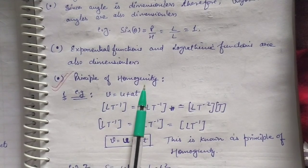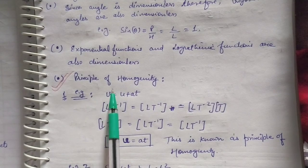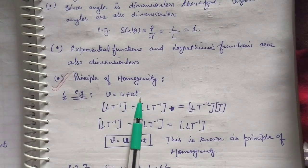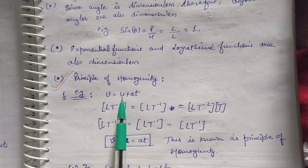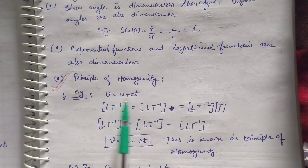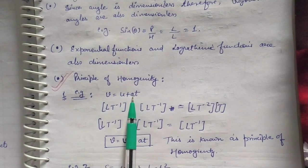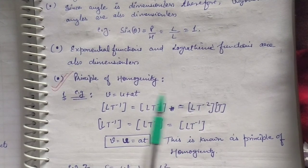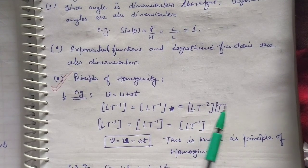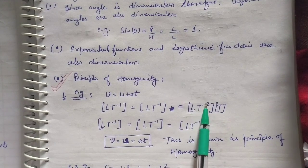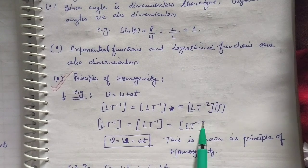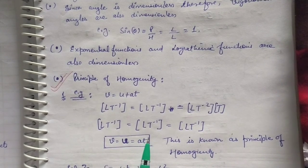Consider the first equation of motion: v = u + at. The dimension of v is LT⁻¹ because v is velocity. u is initial velocity, also with dimension LT⁻¹. a is acceleration with dimension LT⁻², and t is time with dimension T. So the dimension of at is LT⁻² × T = LT⁻¹. We see all three terms — v, u, and at — have equal dimensions LT⁻¹. This is known as the principle of homogeneity.